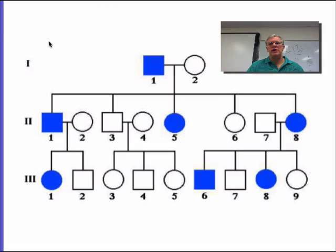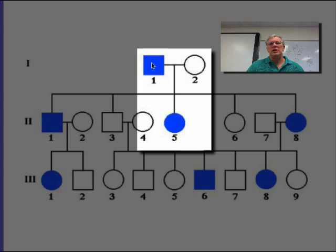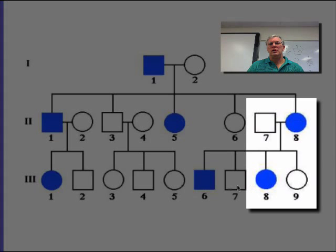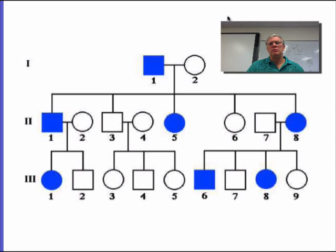Let's use those three rules to determine whether this is a dominant, recessive, or sex-linked trait. As we look over this pedigree and the individuals in each generation, we can see that one of the parents in each generation has the disorder. So using that rule, this is probably going to be a dominant gene being passed along creating this disorder.